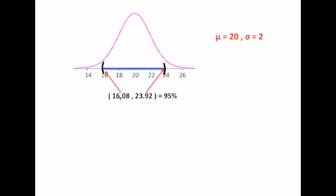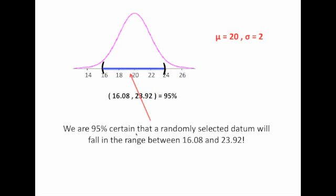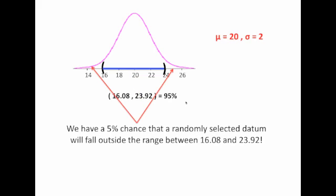What I've done here is illustrate for you that 16.08 is a lower bounds, 23.92 is an upper bounds, and 95% of the data are contained within this interval. We're 95% certain that if we randomly select a datum value, that datum value will fall in a range between 16.08 and 23.92.